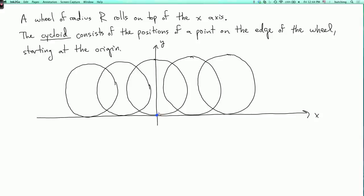So when the wheel has rolled to the right a little bit, the point is no longer going to be touching the x-axis, it's going to have moved up, maybe over here somewhere. When the wheel rolls further to the right, this point moves up some more.